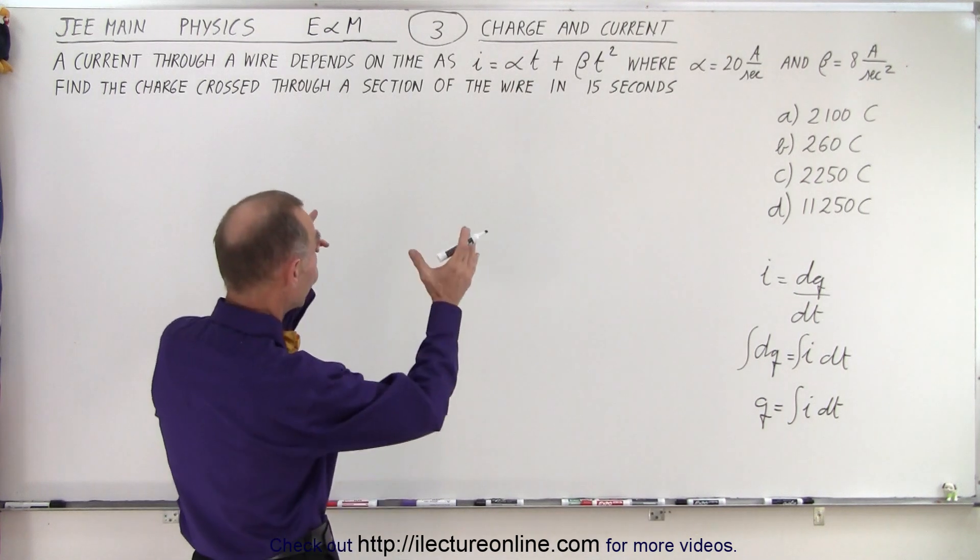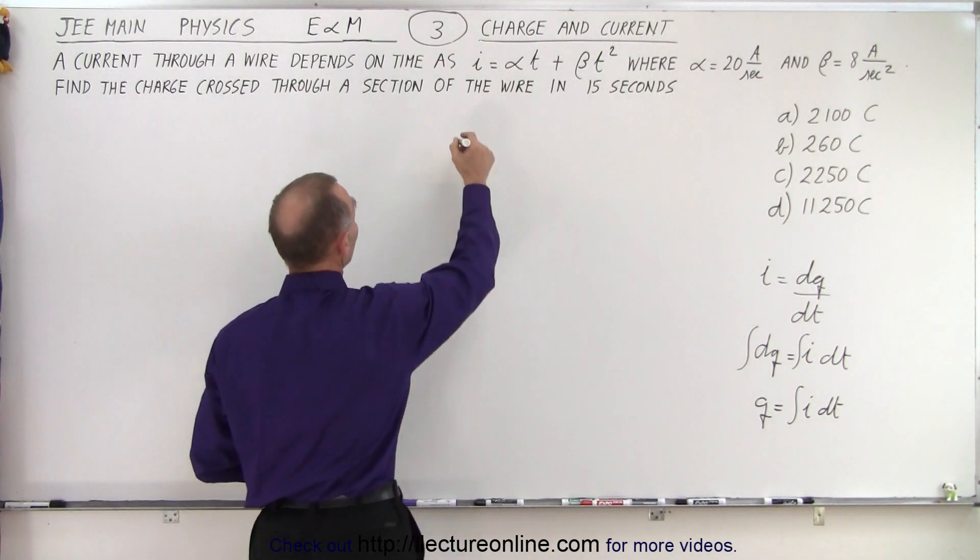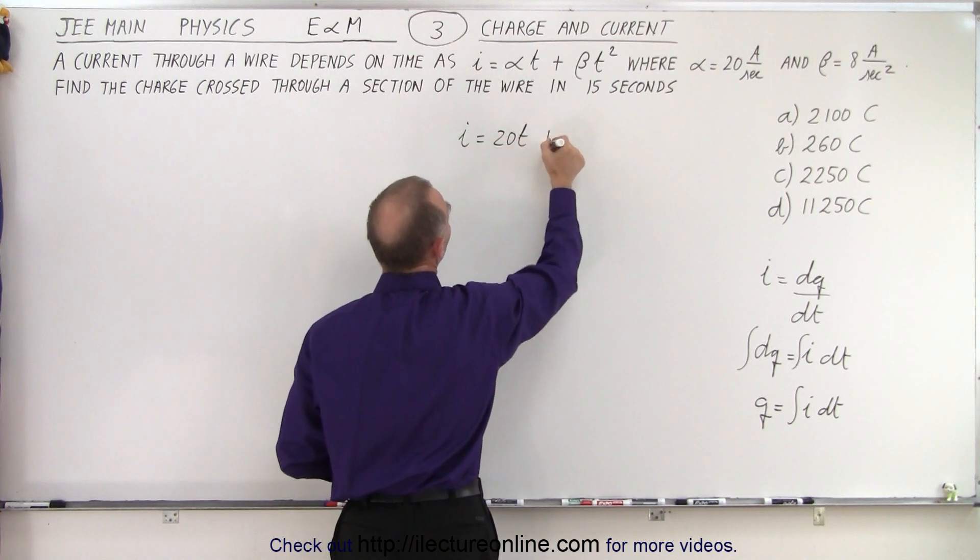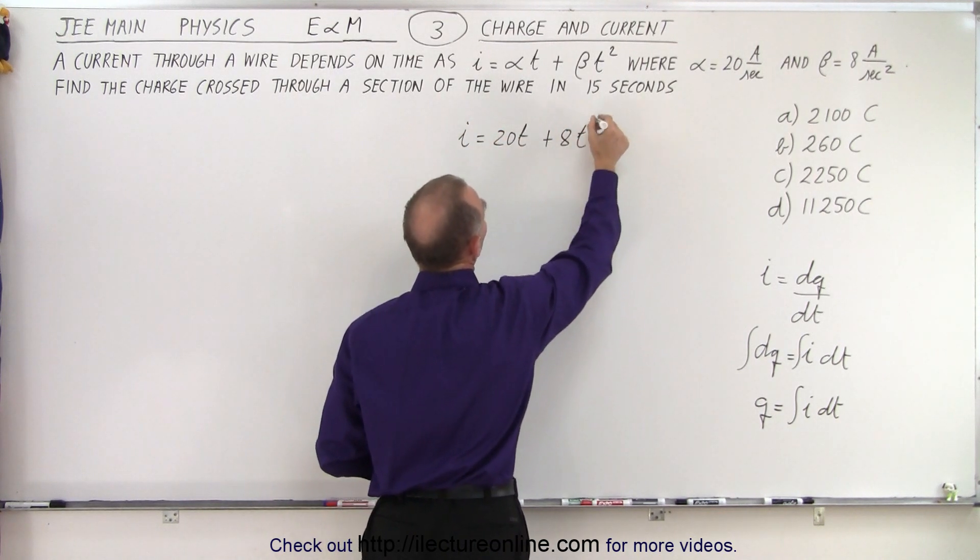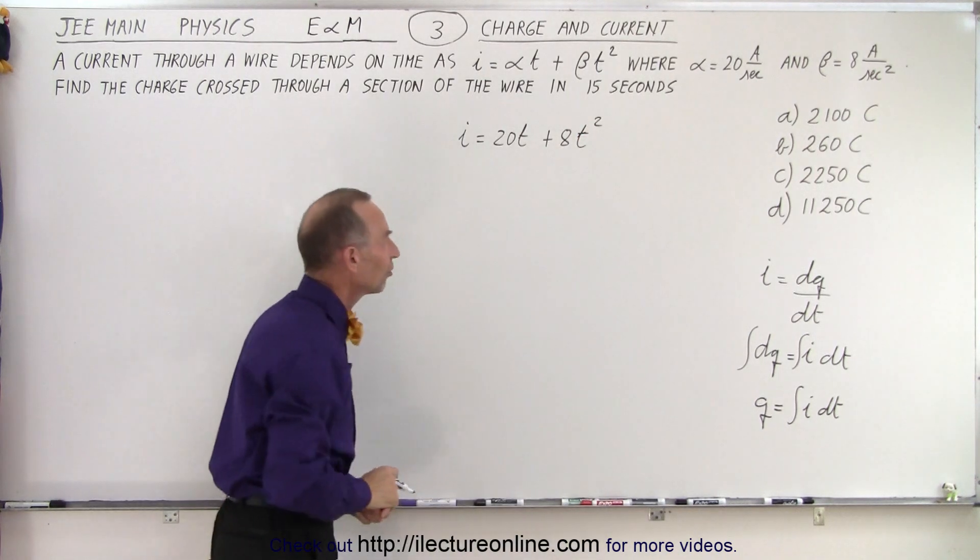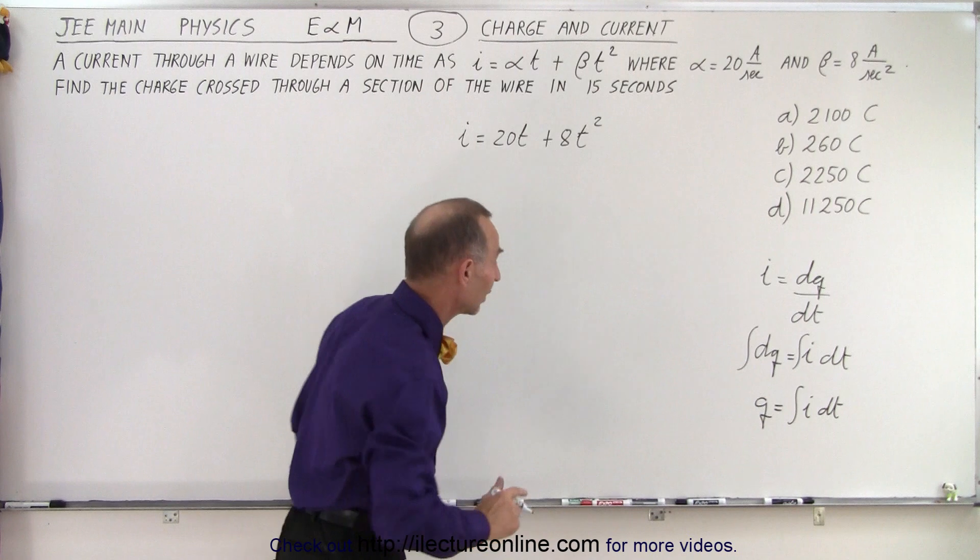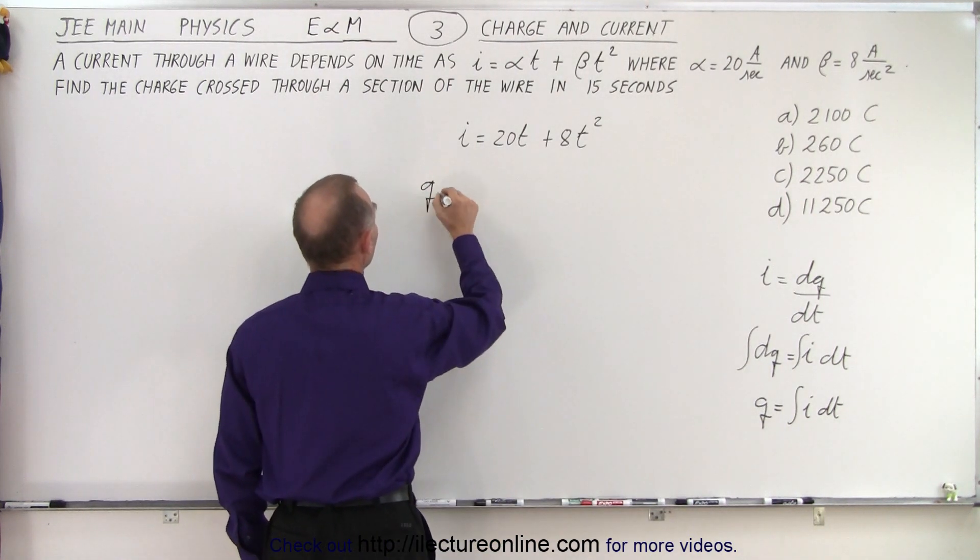Once you realize that, then you look at the equation, plug in the numbers, and you realize that i is equal to 20t plus 8t squared. We don't need the units, we can just leave it like that.